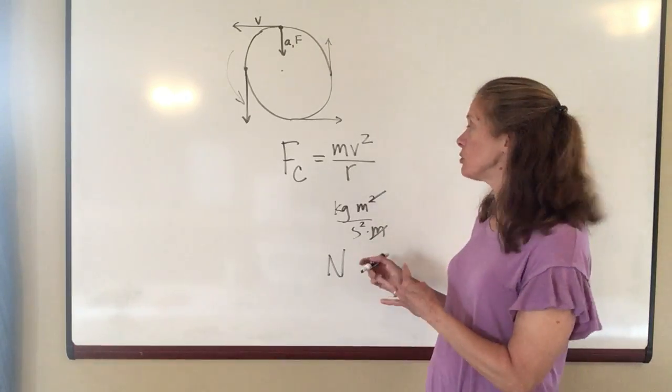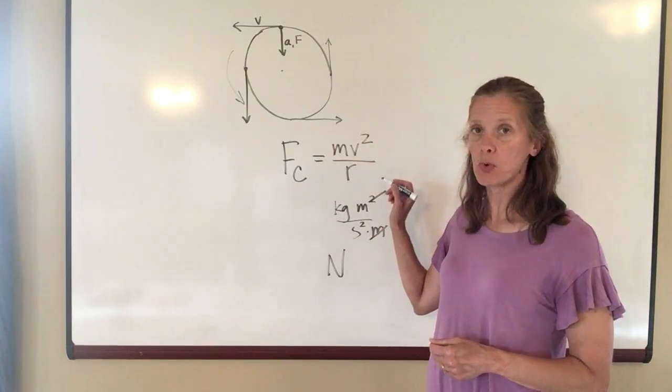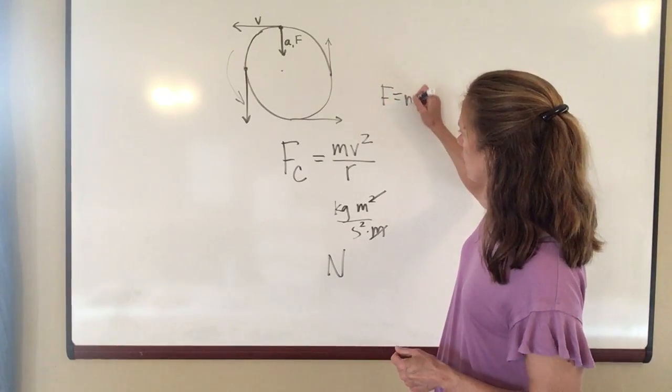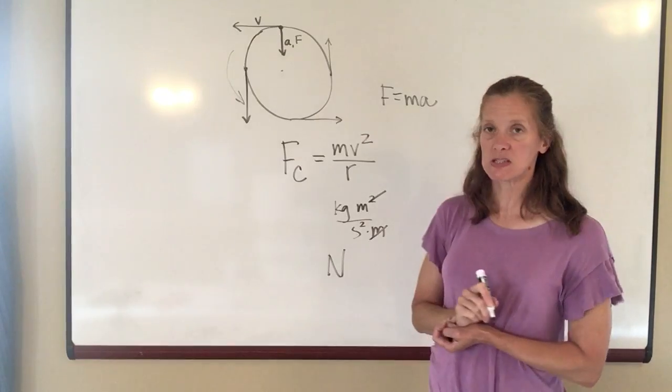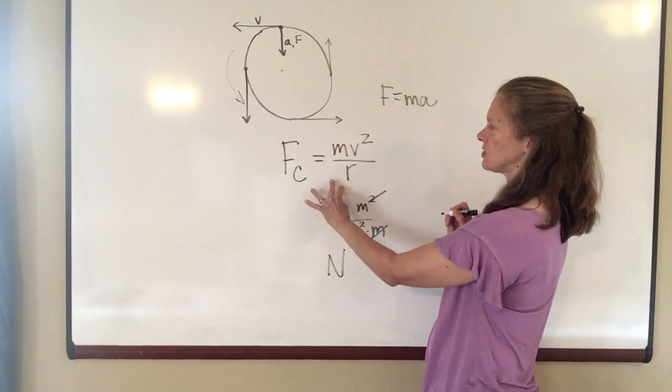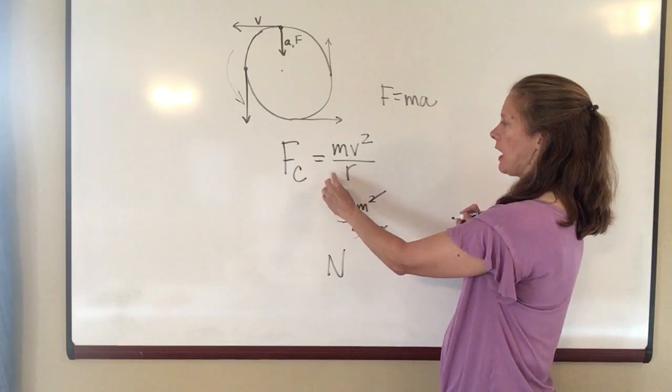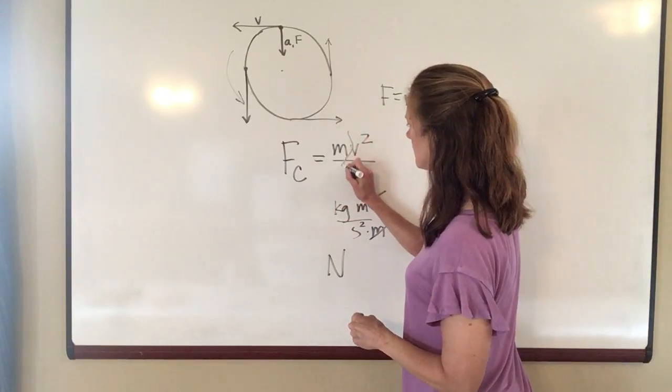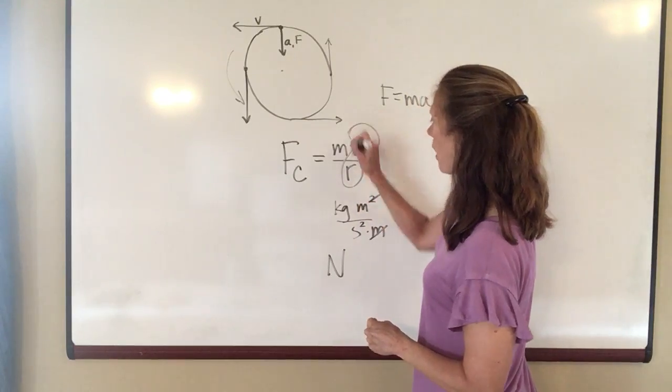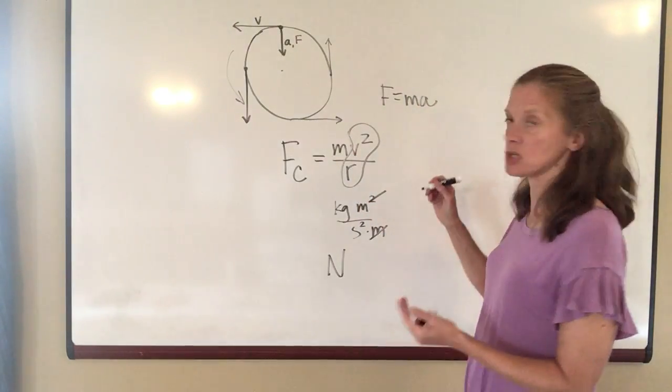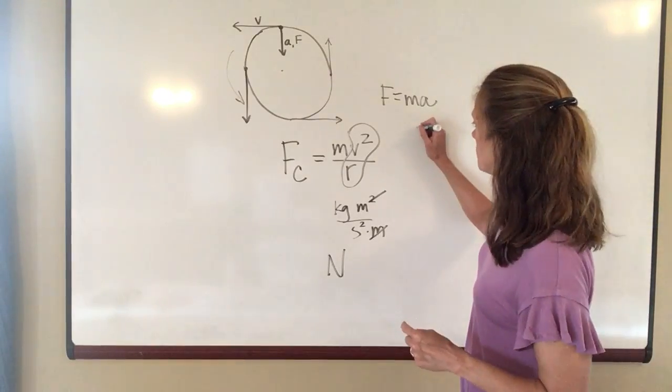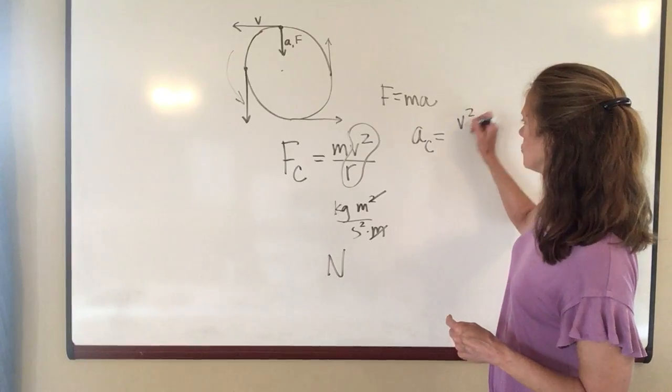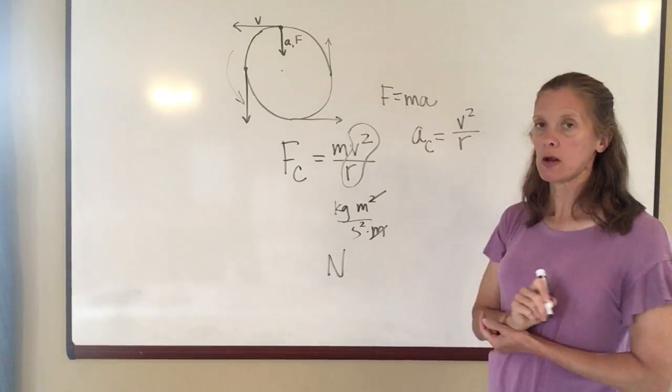Okay, so same units, it's just that the equation for force looks a little bit different. What we're used to seeing is that force equals mass times acceleration. So if I apply that to this equation, then what that means is that if this is the mass, that means that this part right here has to be equal to acceleration. So that's where the second equation comes from, and centripetal acceleration is equal to the velocity squared over r.